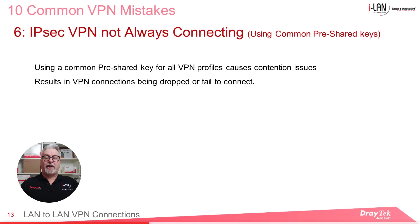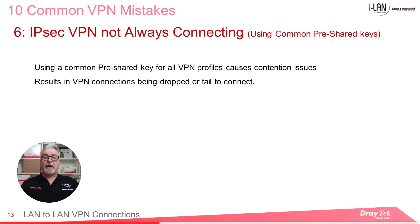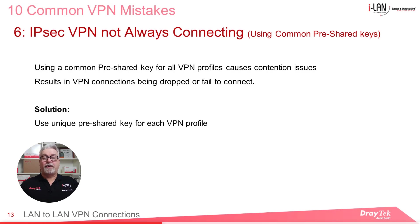One common mistake when setting up multiple IPsec LAN-to-LAN VPN tunnels is using the same pre-shared key for all VPN profiles. An incoming IPsec VPN connection uses the pre-shared key to authenticate the connection, and if multiple profiles are using the same pre-shared key, there could be some contention for the same profile from two or more incoming connections. This leads to unpredictable results with some connections being dropped or unable to be established. The solution is to use unique pre-shared keys for each VPN profile.